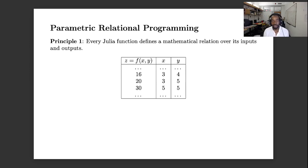Okay, so by doing this process we actually computed a complete and sound parametric inverse of this composite function. So what does this mean in a broader sense? So the first principle is that every Julia function defines a mathematical relation over its inputs and outputs. So in this example we can think about x and y and z as this kind of relation, and a relation is just a set of values or a table. So we have 3 and 4 and 16 are in the relation.